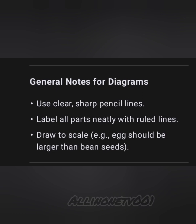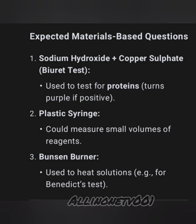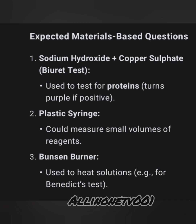General note on diagrams for the exam: use a clean sharp pencil, label all parts neatly with ruled lines, draw to scale. Expected materials-based questions include: Biuret reagent with copper sulfate — turns purple if protein is positive; Benedict's test for sugars. Use small volumes of reagents. A Bunsen burner is used to heat solutions, especially for the Benedict test.